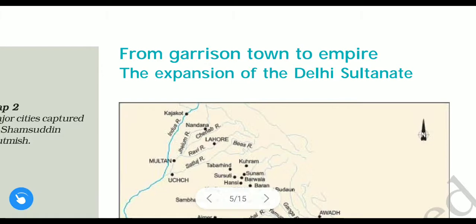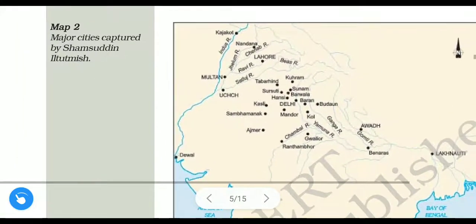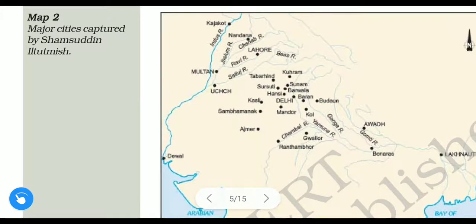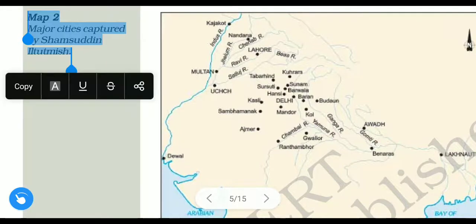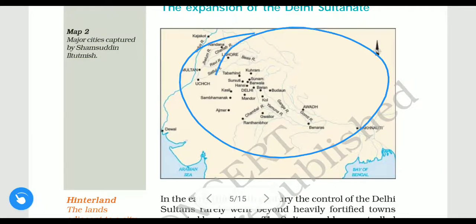First, we will look at a map showing the major cities which were captured by Shamsuddin Iltutmish. In this map, all the cities that were captured by Sultan Shamsuddin Iltutmish are shown — all these are the names of the cities.